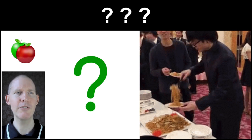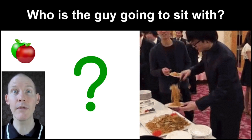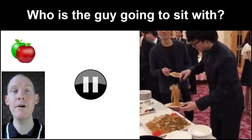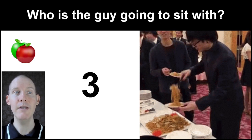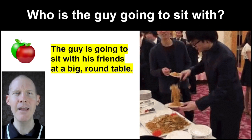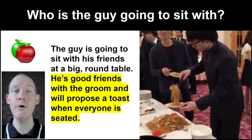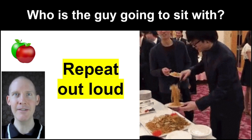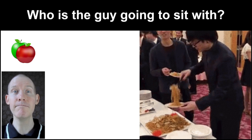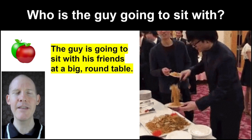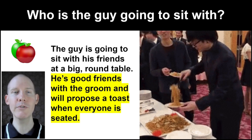Next question: Who is the guy going to sit with? Pause the video and come up with your answer. We're going to see my answer in five, four, three, two, one. The guy is going to sit with his friends at a big round table. He's good friends with the groom and will propose a toast when everyone is seated. Another opportunity for pronunciation — repeat out loud. Who is the guy going to sit with? The guy is going to sit with his friends at a big round table. He's good friends with the groom and will propose a toast when everyone is seated.